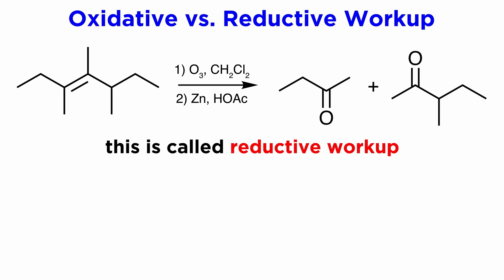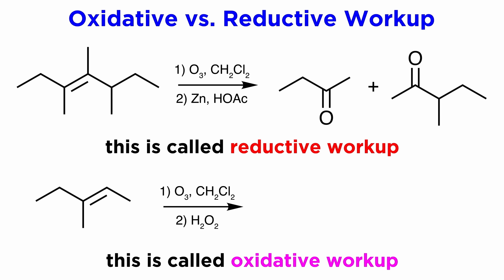Lastly, we should note that we have been discussing ozonolysis of alkenes in the context of reductive workup, that being the step with zinc, which can also be achieved with dimethyl sulfide. This is the more common context for ozonolysis, but we should mention that oxidative workup is also possible. This would entail using something like hydrogen peroxide for the second step instead, and the result would mean that anywhere we expected an aldehyde, we will now get a carboxylic acid.